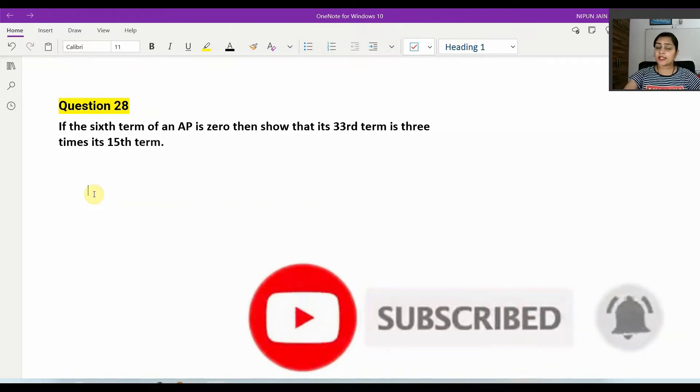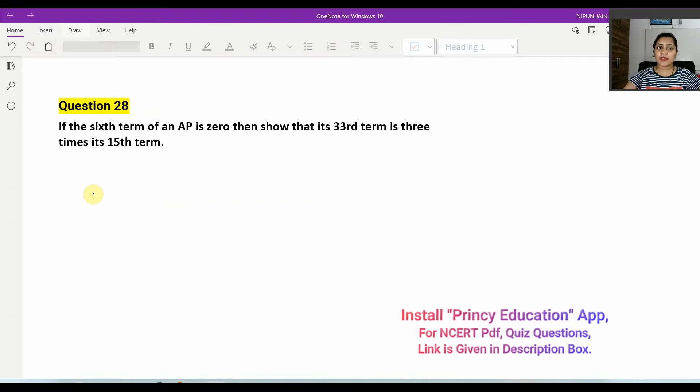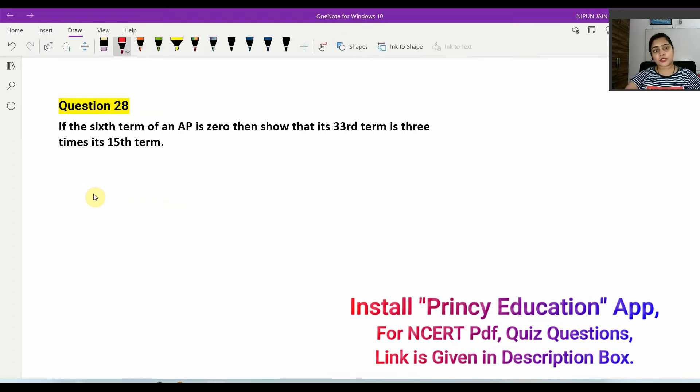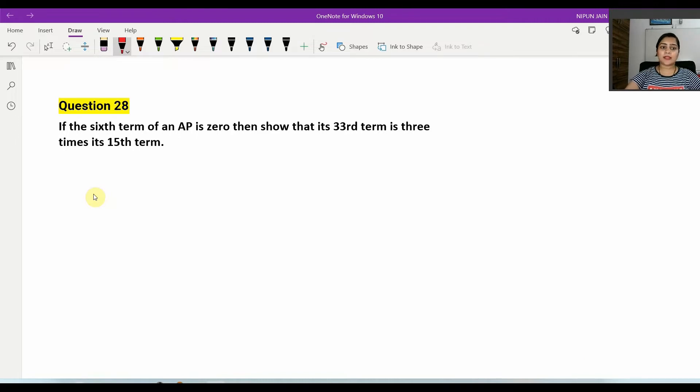So guys, today I am going to solve Class 10th NCERT book, new edition, Chapter 5, Exercise 5.2, Question number 28. It is a very interesting question like question number 27. If the 6th term of an AP is 0, then show that the 33rd term is 3 times its 15th term.